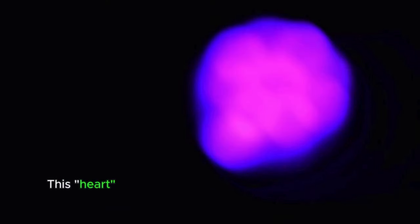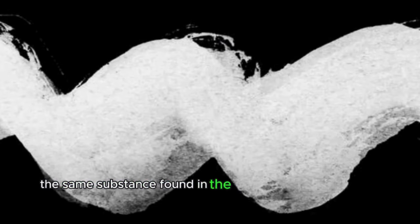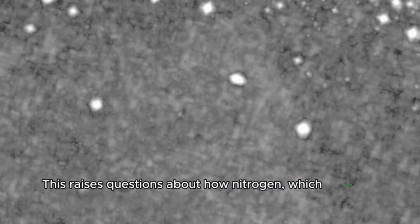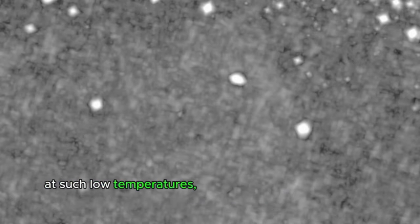This heart of Pluto, as observed by a spectrometer, is composed of nitrogen. The same substance found in the snow-capped mountains photographed by the probe. This raises questions about how nitrogen, which typically exists in a gaseous state, at such low temperatures, could form a liquid and fill the crater.